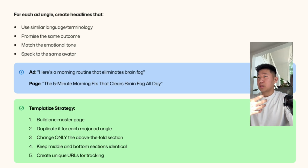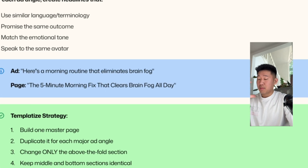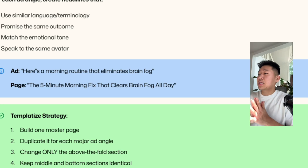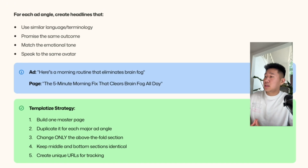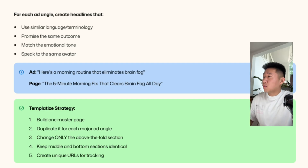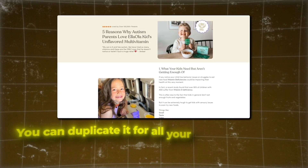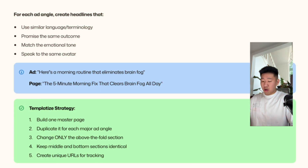For each ad angle, you must create headlines that use similar language and terminology, promise the same outcome, match emotional tone, and speak to the same avatar. The pre-sale bridge page needs to continue the exact conversation the ad started. For example, if the ad talks about a morning routine that eliminates brain fog, your headline could be something like 'The Five-Minute Morning Fix That Clears Brain Fog All Day' — then continue that conversation as a listicle.